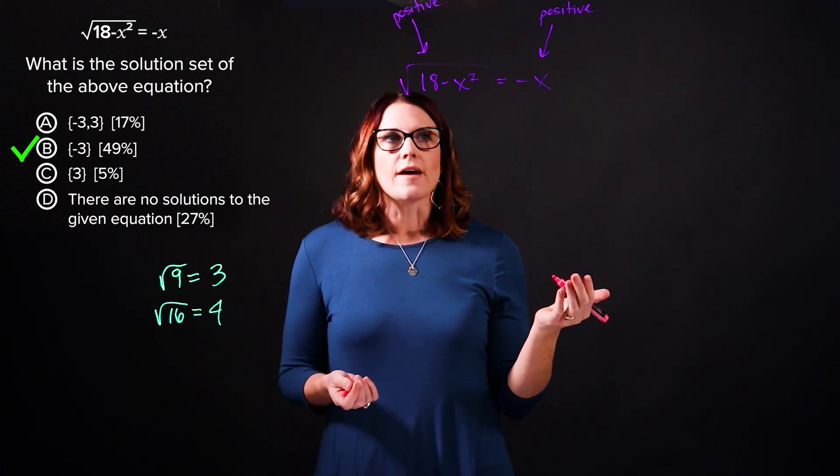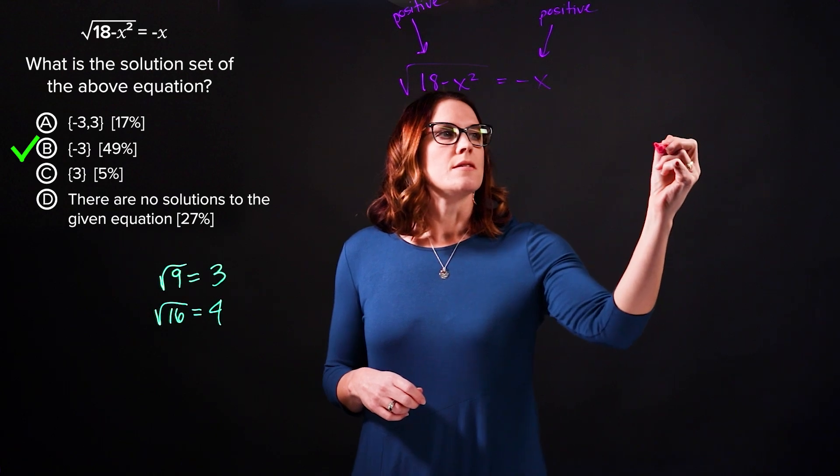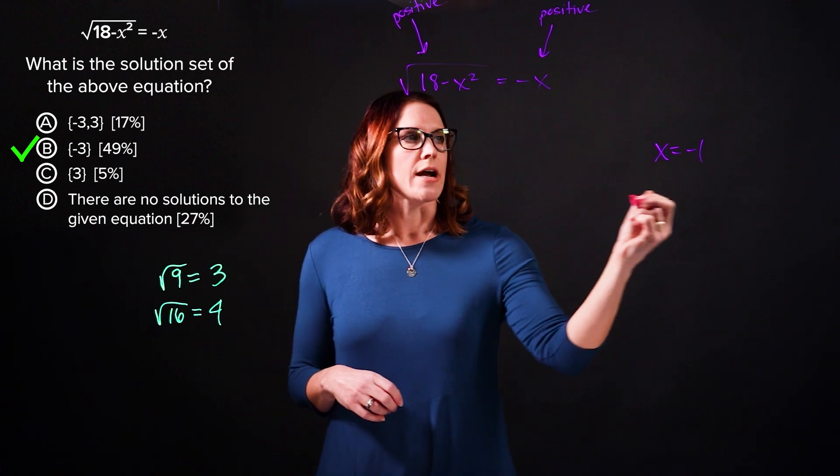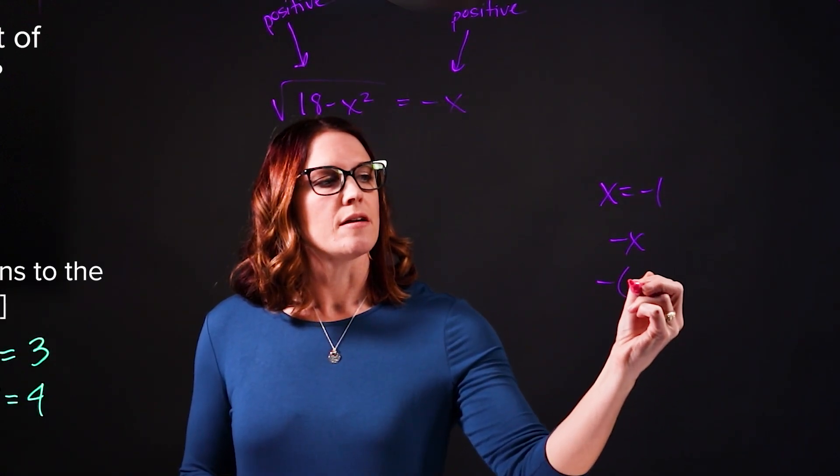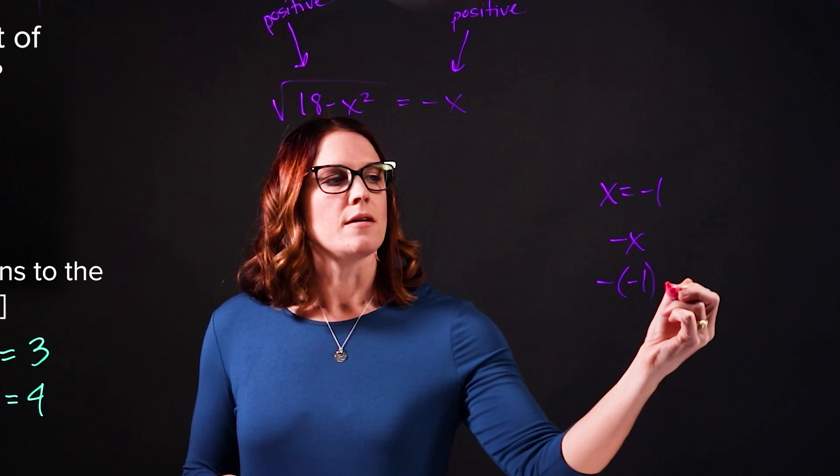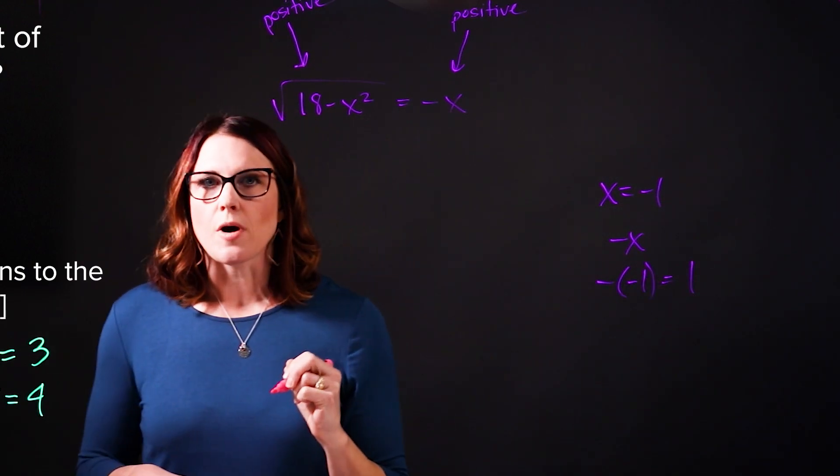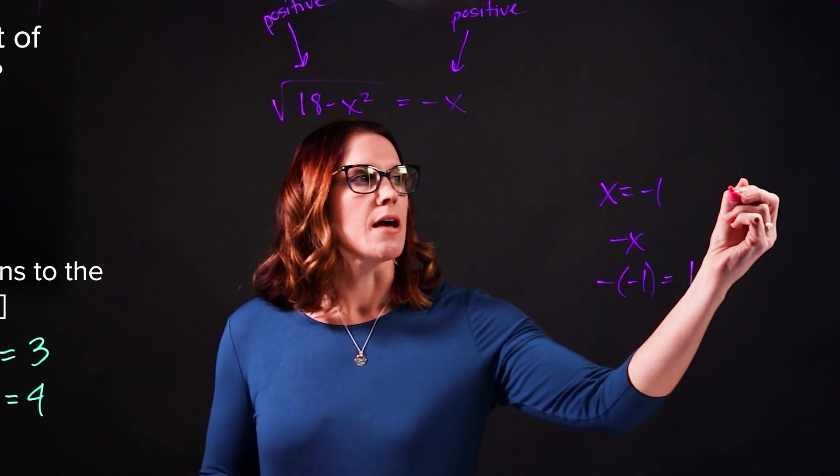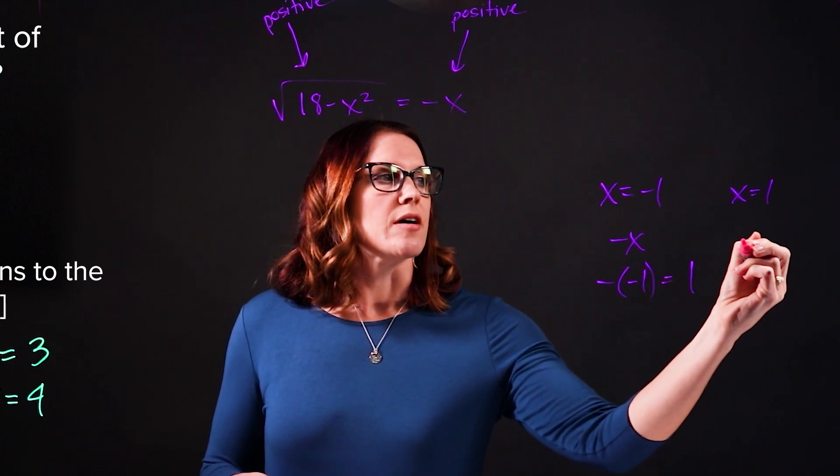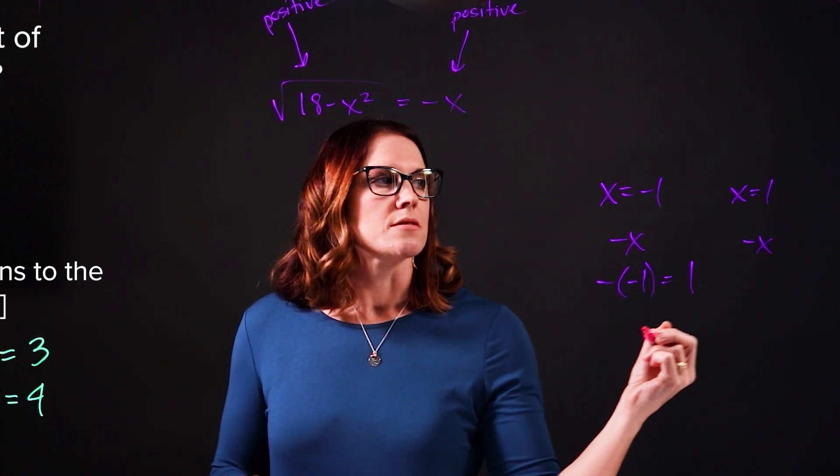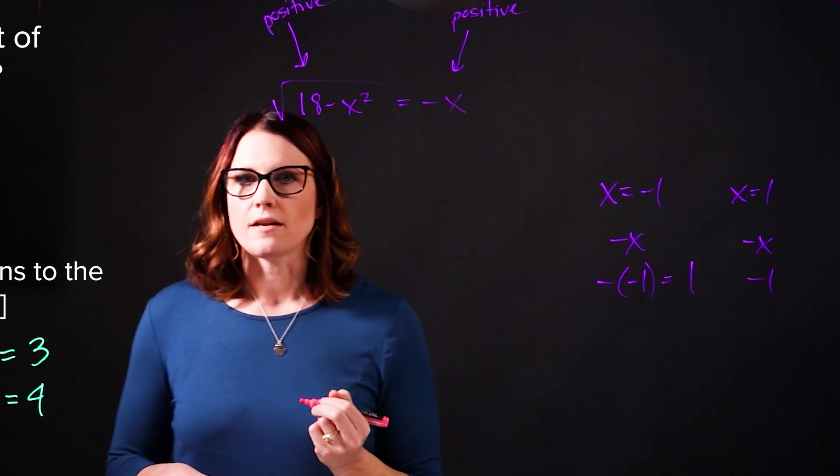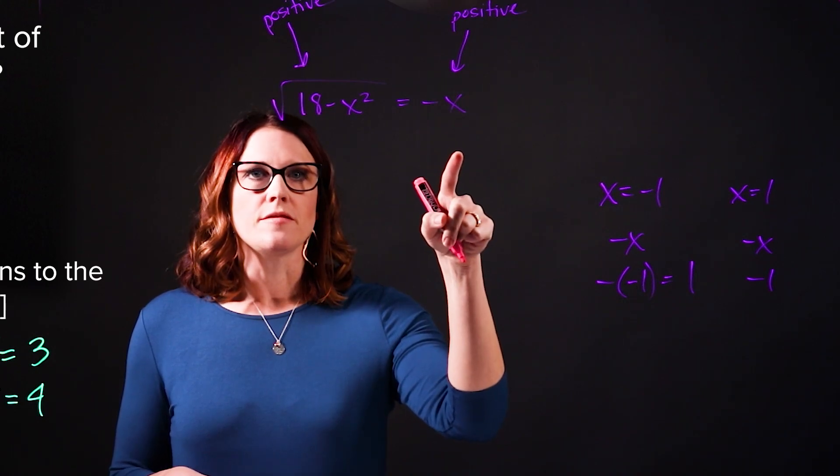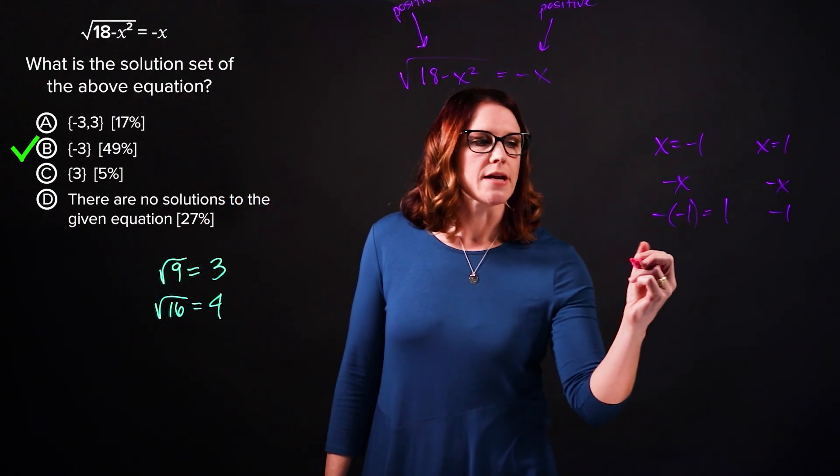For example, let's say the value of x is negative 1. So if I plug that in for x, I end up with negative negative 1. The negatives cancel out, so I end up with a positive 1. If the value of x were positive, let's say x is positive 1. If I plug that into negative x, then I would end up with a negative value. Well, we just talked about how this side of the equation must be positive. So the value of x must be negative.